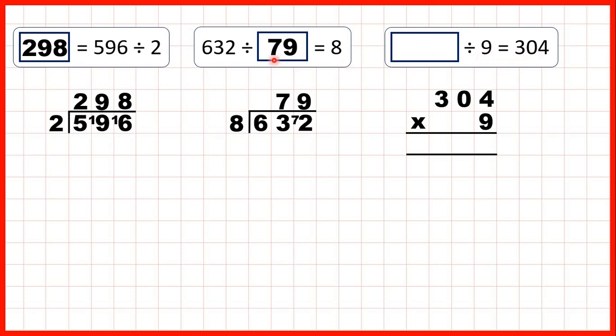So, if it's the second number of the division that's missing, we still divide to find our missing number. But if it's the first number that's missing, we multiply. 4 times 9 is 36. So, that's 3, 6 with the first digit written above the next place value column along.